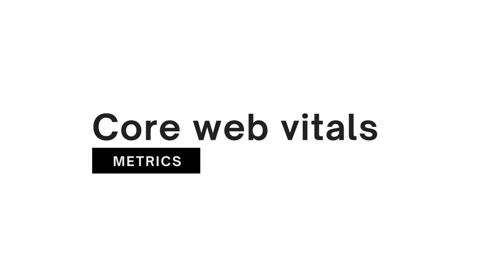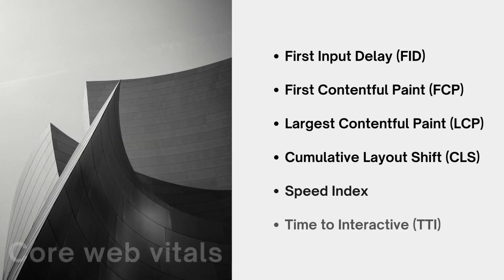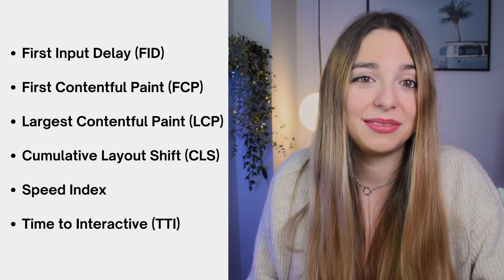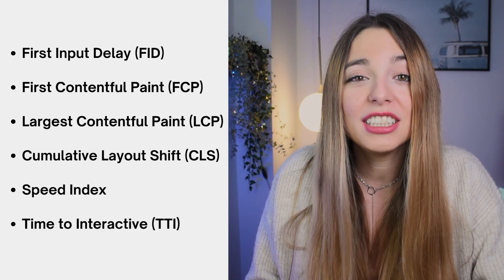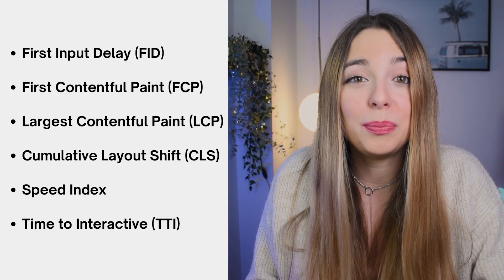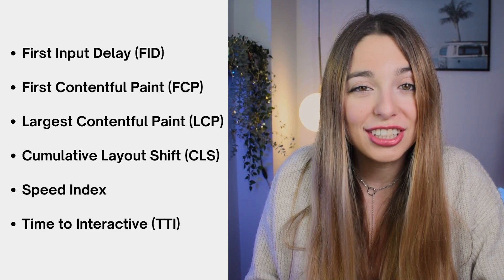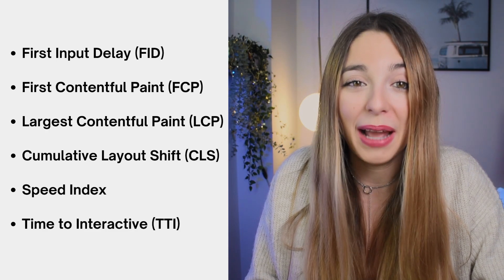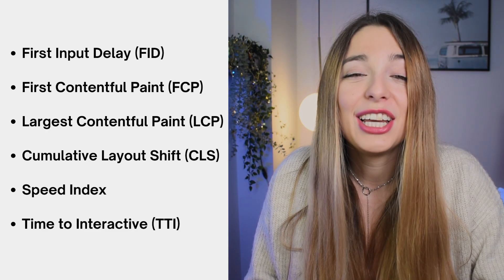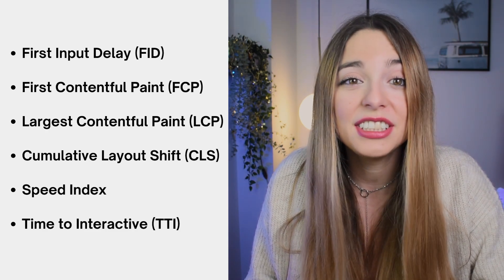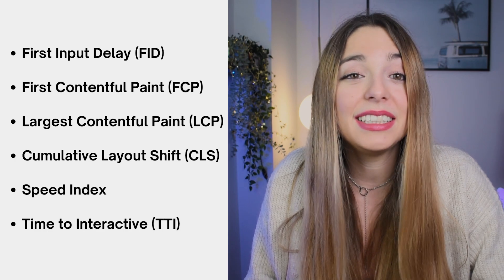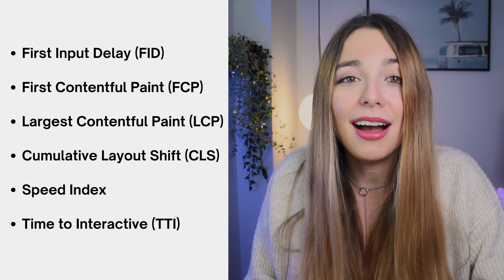The Core Web Vitals metrics that we are going to look into today are the following: First Input Delay, First Contentful Paint, Largest Contentful Paint, Cumulative Layout Shift, Speed Index, and Time to Interactive.